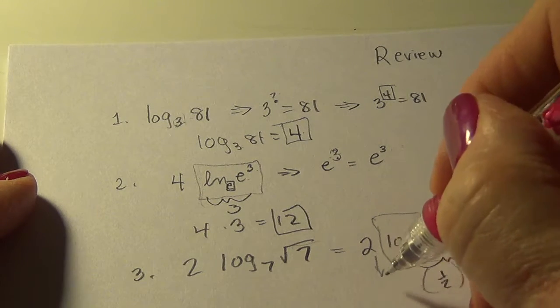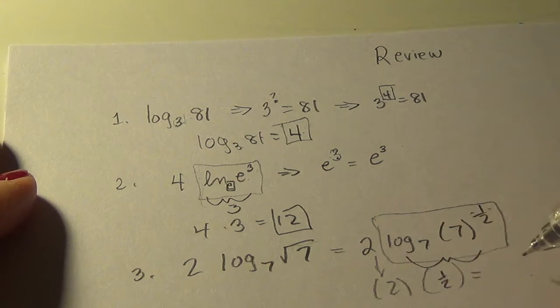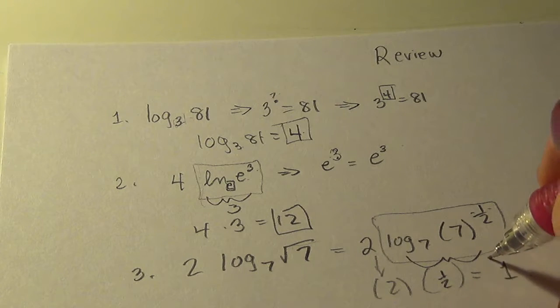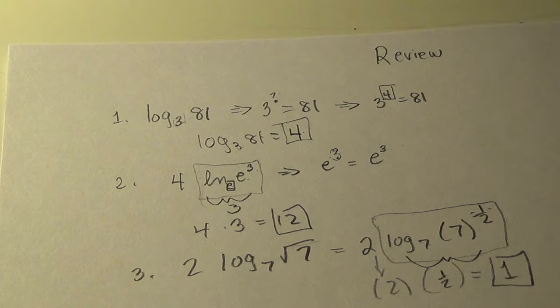It's just one half. And then we have the times two, two times one half, two halves, or one.